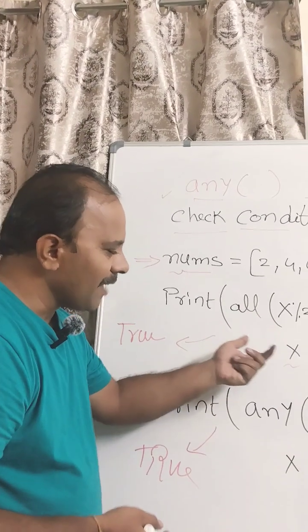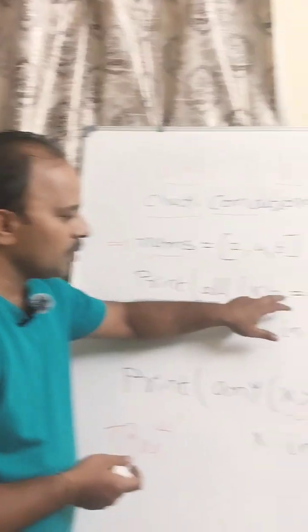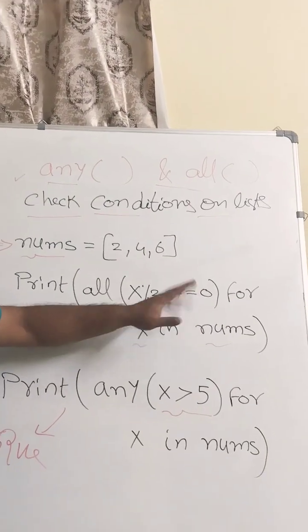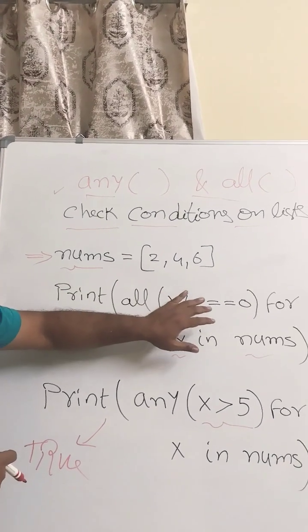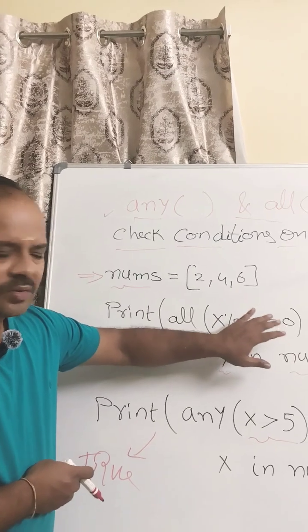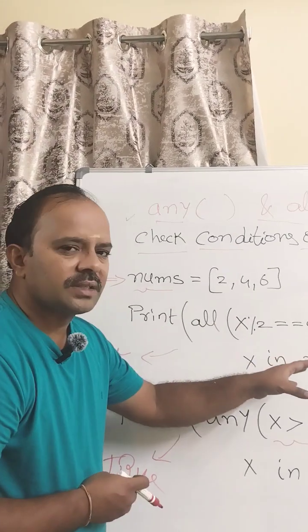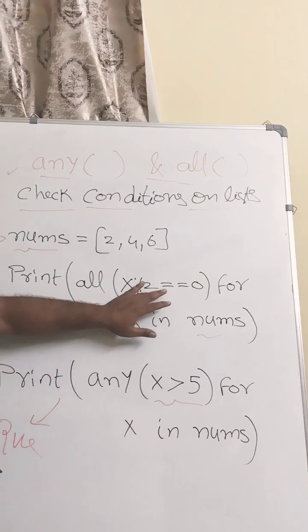You are taking every element from the list nums and imposing the condition x modulo 2 equals 0. So let us take the value 2: 2 modulo 2 is 0, 4 modulo 2 is 0, 6 modulo 2 is 0. So all the elements in the list nums are satisfying the condition.